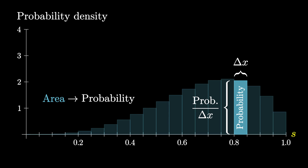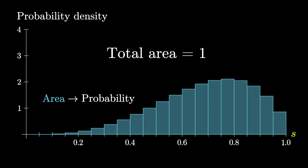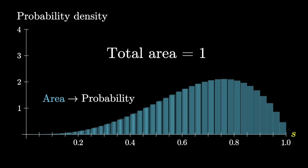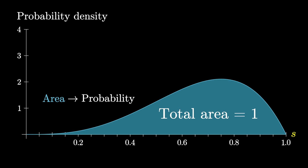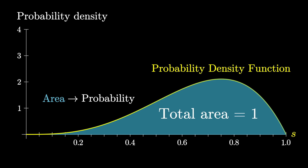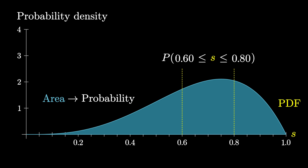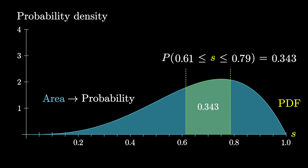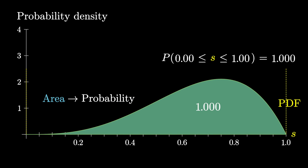Even though all the individual probabilities of falling into any one bucket approach 0, the overall shape of the distribution is preserved and even refined as we take this limit. The y-axis of the plot no longer represents probability. Since probability lives in the area of these bars — width times height — the height represents a kind of probability per unit in the x-direction, what's known as a probability density. The total area must equal 1 for this to represent a valid probability distribution. The way you interpret a probability density function, or PDF, is that the probability that S sits between two values equals the area under the curve between those two values. The probability of any one specific value is 0, the area of an infinitely thin slice, while the probability of all of them together is 1, the area under the full curve. It sidesteps the paradox.